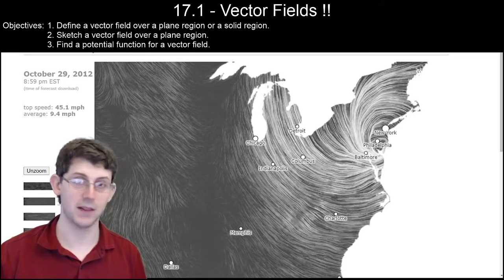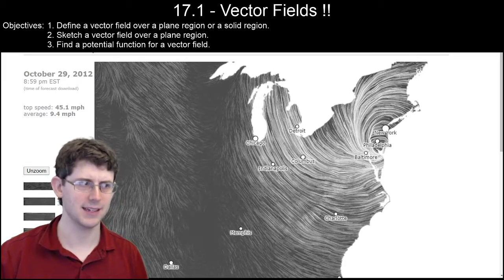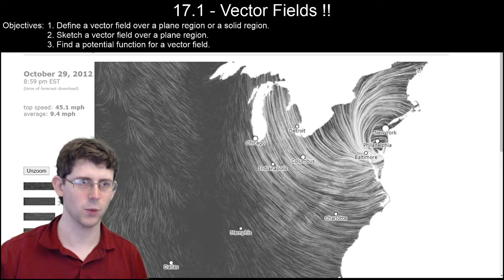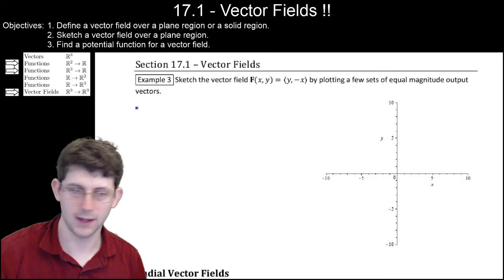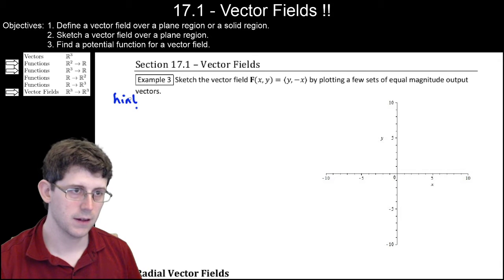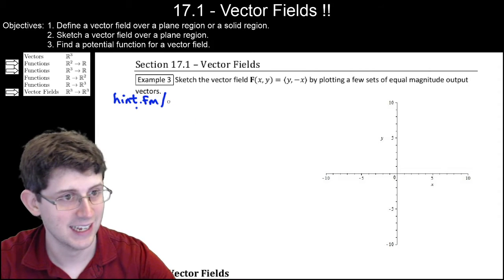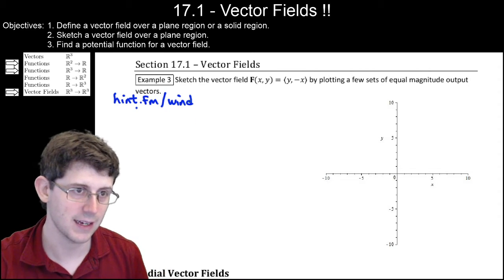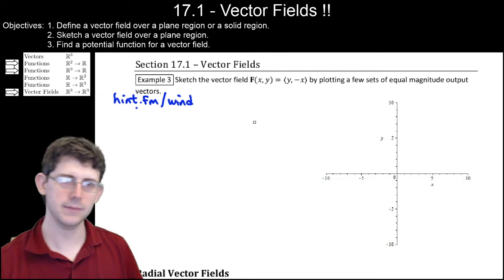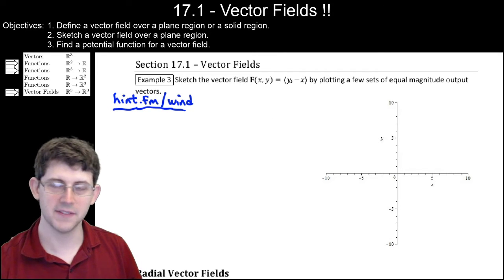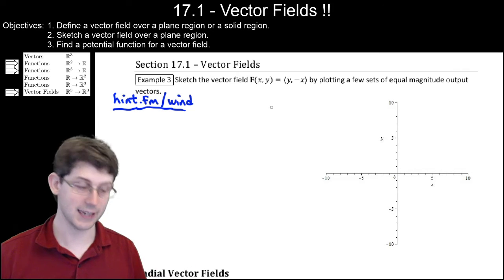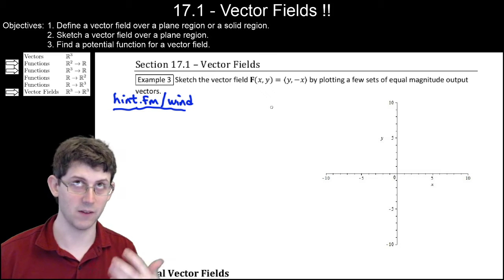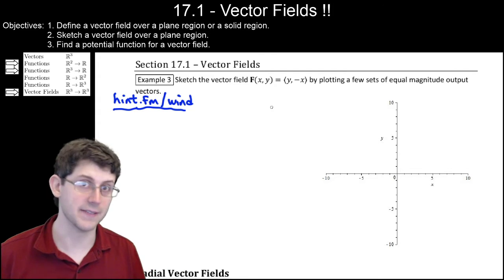If you're curious, the website is hint.fm/wind and you can get the current wind map — it's kind of cool. Anytime there's a force on you and that force is different depending on where you're standing, that's a vector field.